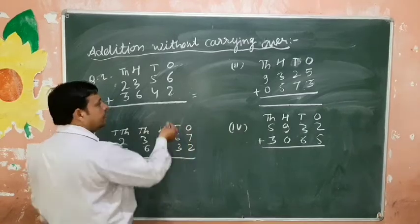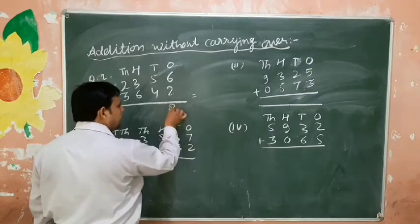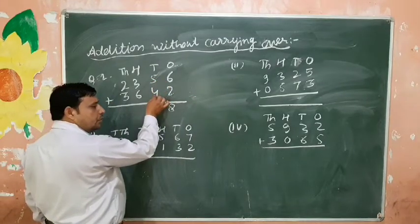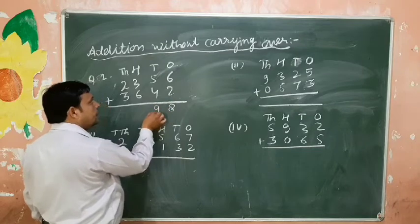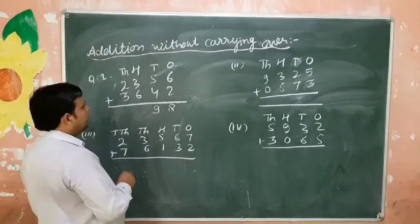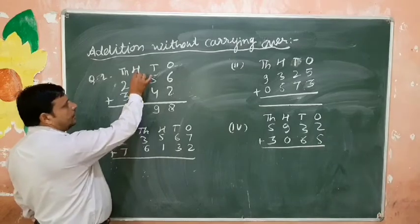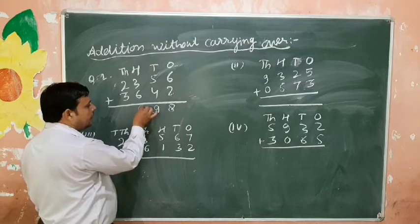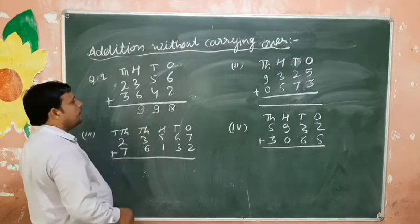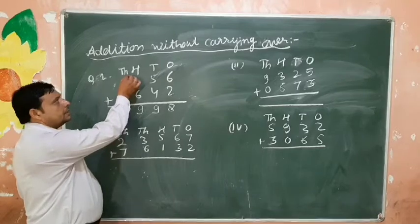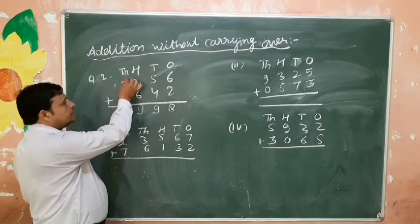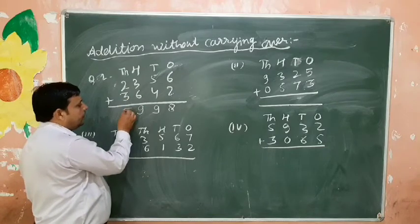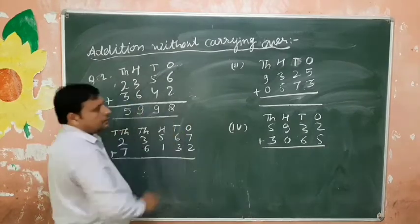Five plus four is nine. Next, hundreds place: three plus six is nine. Next, thousands place: two plus three is five. This is my answer.